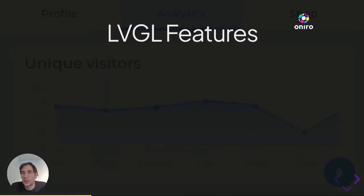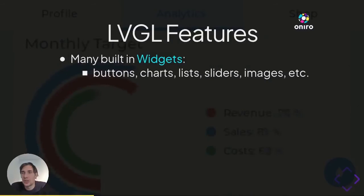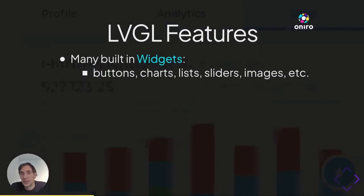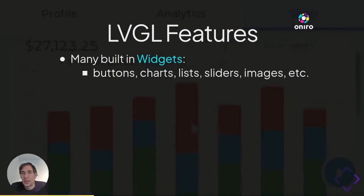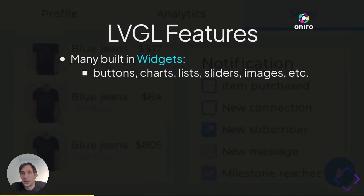Let's learn more about the features of LVGL. In the background you can see a demo showcasing the widgets. You can find buttons, charts, lists, sliders, images, tree view, keyboard, text input, checkboxes, various types of pages, calendar, drop-down lists, and so on. In short, LVGL has all the controls you might need to create a UI. You can simply create, delete, and adjust these widgets at runtime.